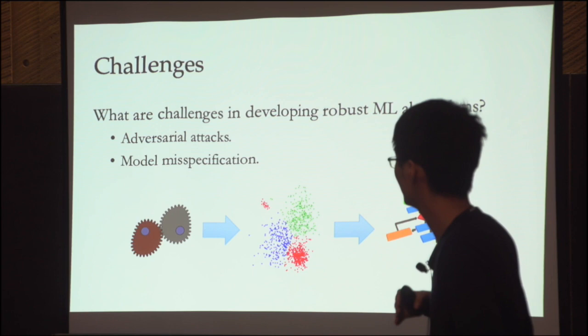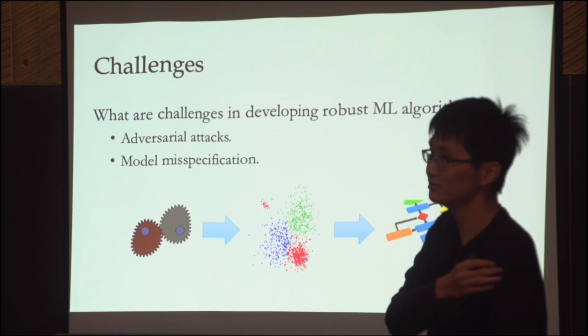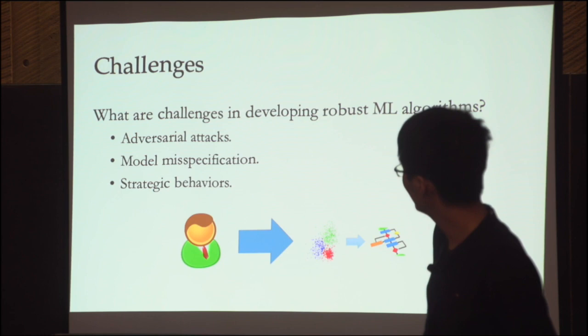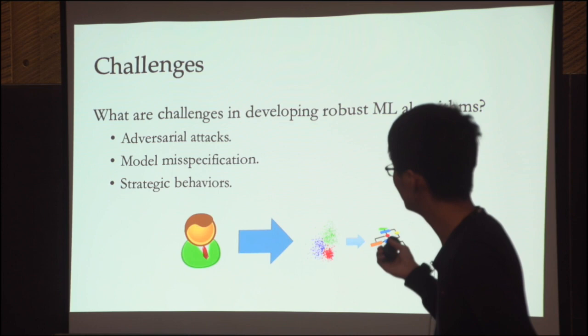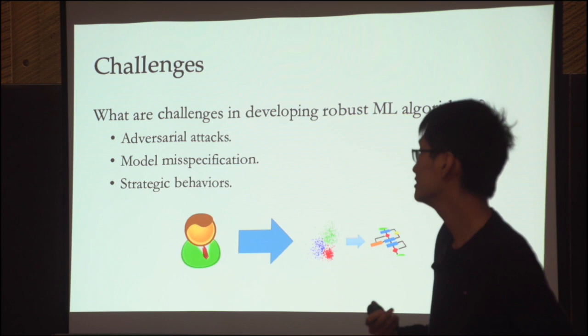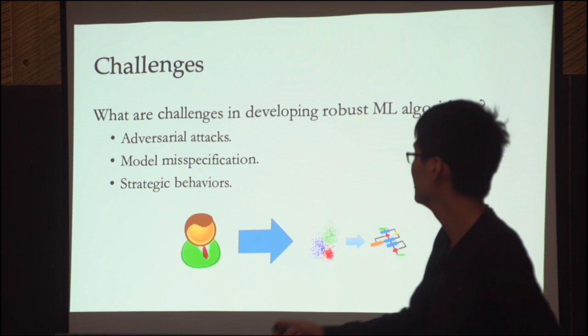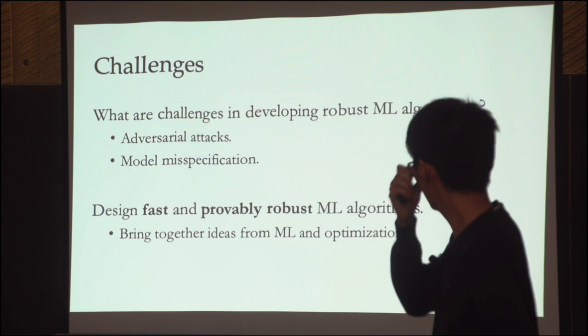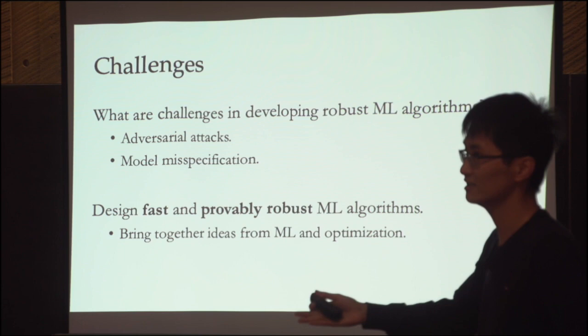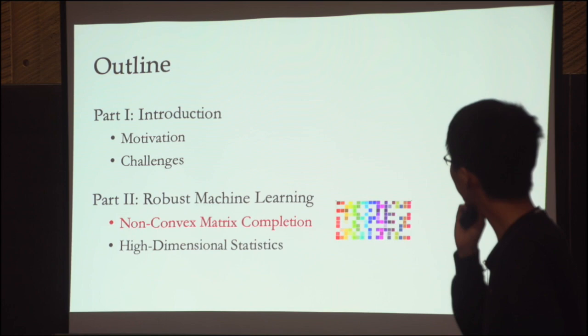Other times there's no adversary — you simply made too strong an assumption on your input data. You assumed the data is Gaussian, but it's actually something very close to Gaussian, and you'd like your algorithm to work even with slight model misspecification. A third aspect — which I won't cover today — is when you're collecting data from users whose incentives aren't aligned with yours, and they may lie about their data. In this talk, we'll focus on the first two cases. The goal is to design fast and provably robust learning algorithms, which will require bringing together ideas from learning and optimization.